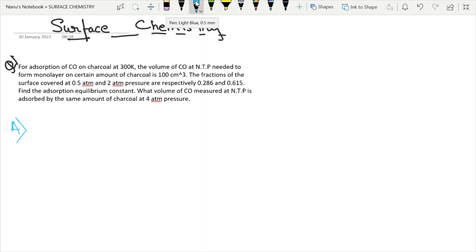So it says for adsorption of CO on charcoal at 300 Kelvin, the volume of CO at NTP needed to form monolayer on certain amount of charcoal is 100 cm³. The fractions of the surface covered at 0.5 atm and 2 atm pressure are respectively 0.286 and 0.615. Find the adsorption equilibrium constant. What volume of CO measured at NTP is adsorbed by the same amount of charcoal at 4 atmosphere pressure.